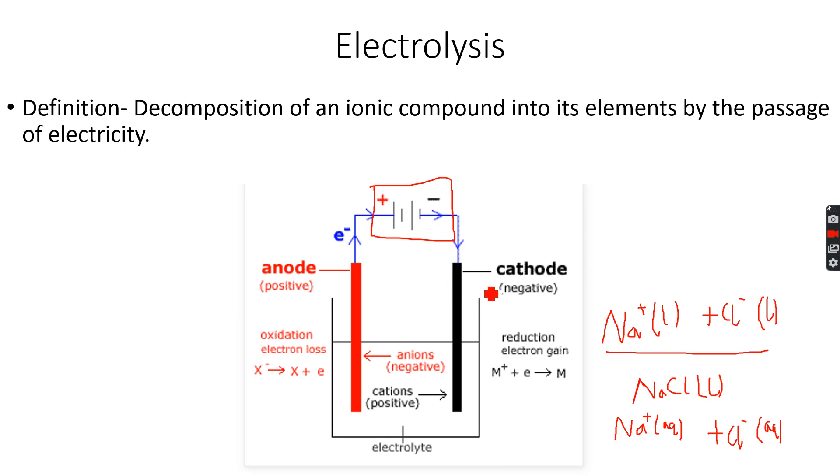These electrodes are made of inert substances such as graphite or platinum because they are inert; they will not react with the electrolyte or with the metal or non-metal that is being produced.